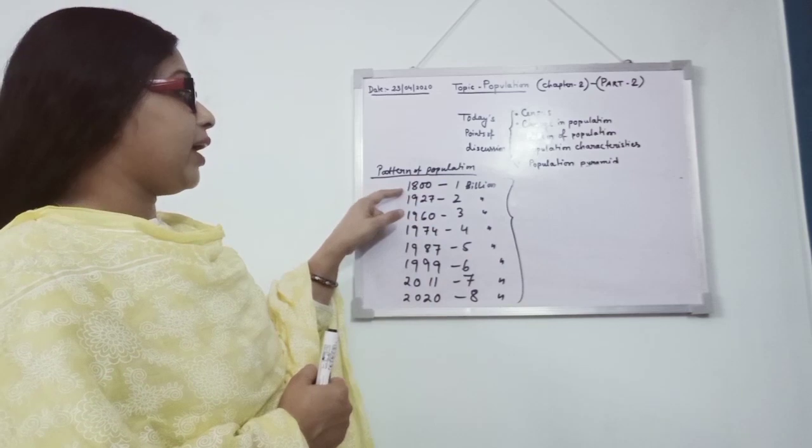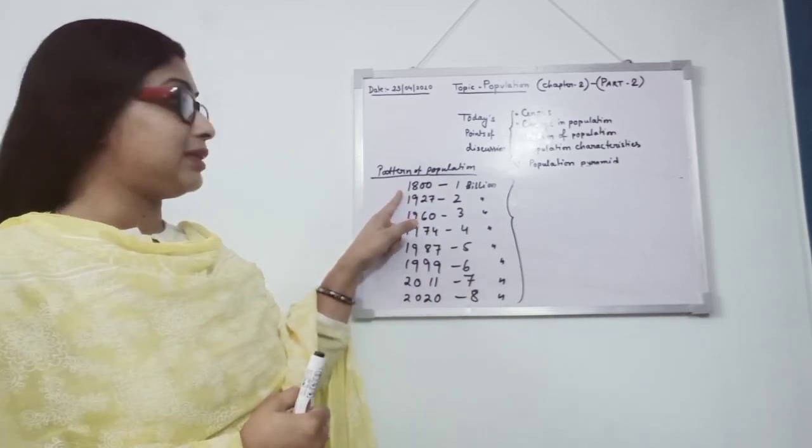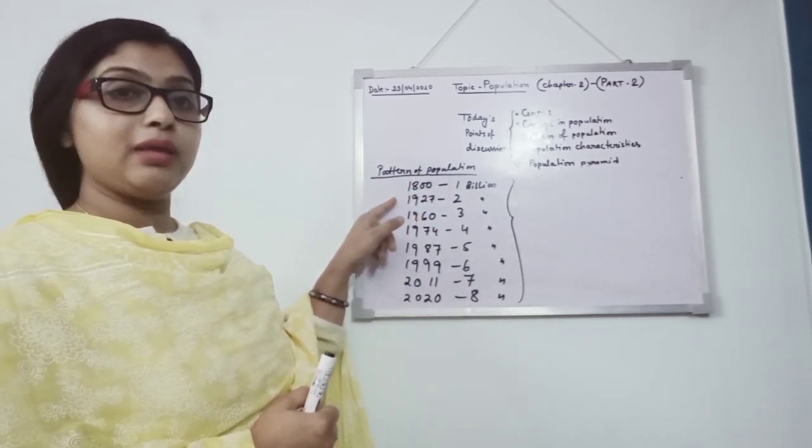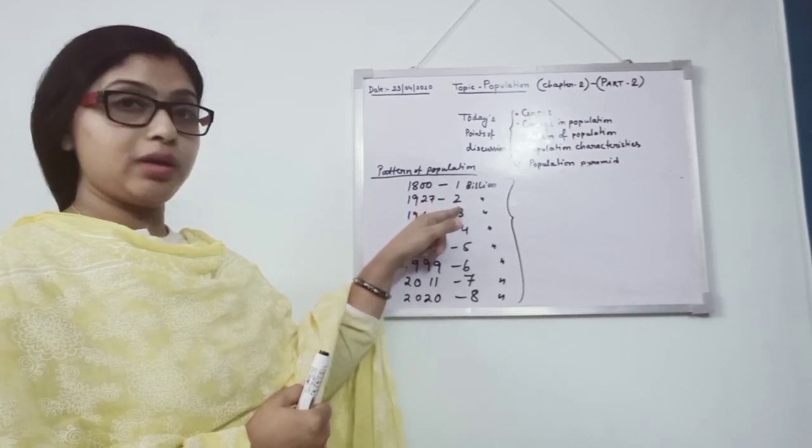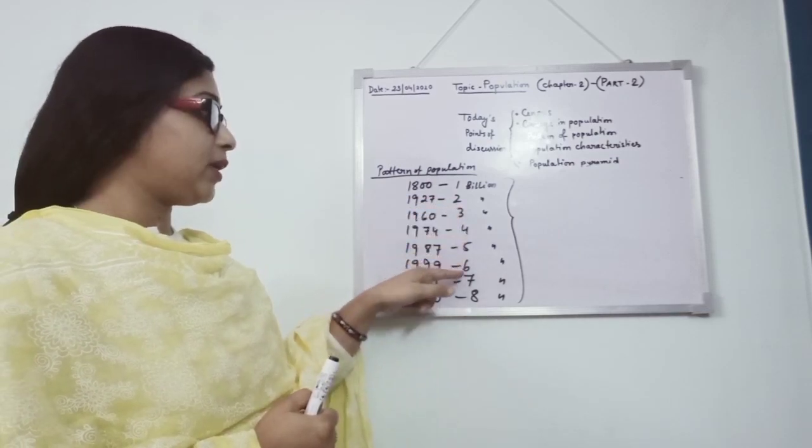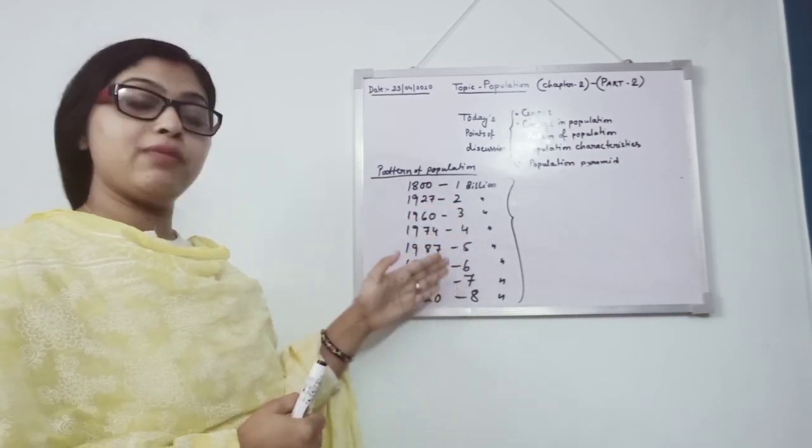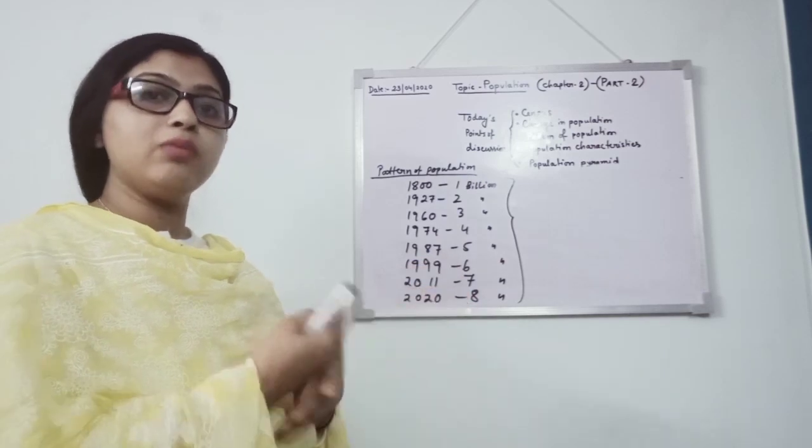Whereas more than 100 years it has taken at the beginning to change the population number, but gradually it is also changing within very less time, more than 1 billion.